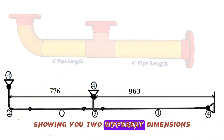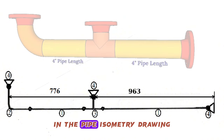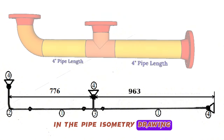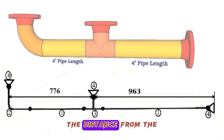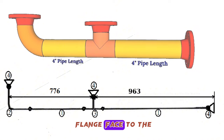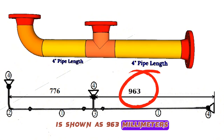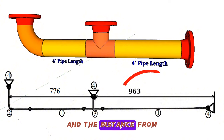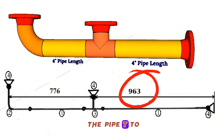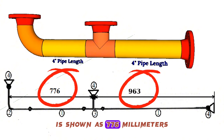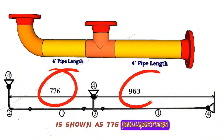Shown in the pipe isometry drawing are two different dimensions: the distance from the flange face to the pipe tee is shown as 963 millimeters, and the distance from the pipe tee to the pipe elbow is shown as 776 millimeters.